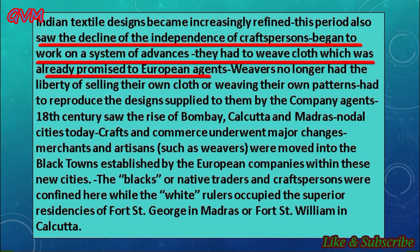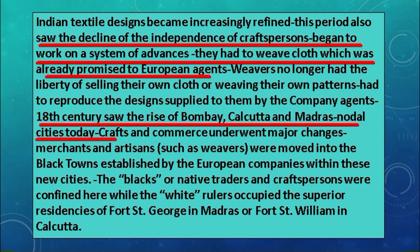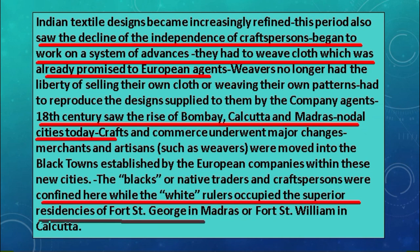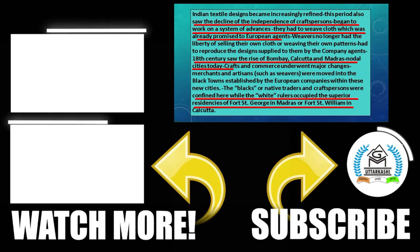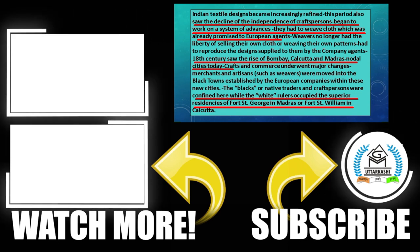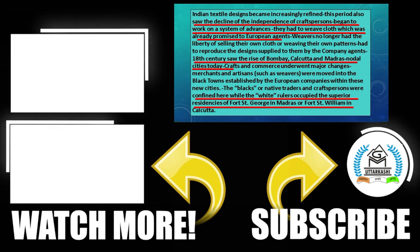The weavers no longer had the liberty of selling their own cloth or weaving their own patterns. The 18th century saw the rise of Bombay, Calcutta, and Madras — the major metropolitan cities of today — which rose due to industrialization. Craft and commerce underwent changes as local native artisans and merchants were moved to the black towns — areas set up by the Europeans for local people — while the white people occupied superior residences like Fort St. George in Madras or Fort William in Calcutta. That concludes chapter six.